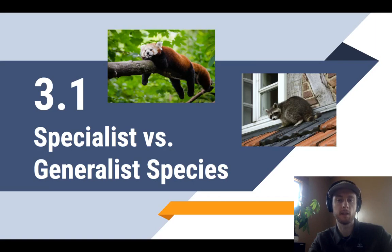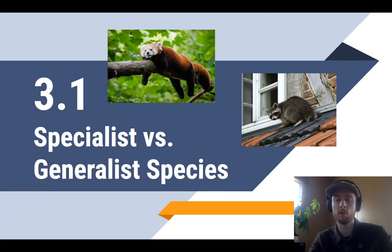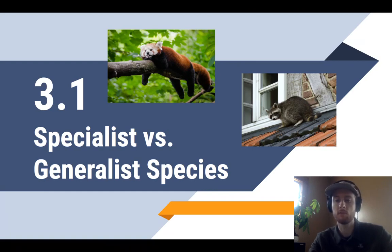Raccoons, on the other hand, have an extremely varied diet, so they're able to eat all sorts of foods. They can eat things like plants and mushrooms, they can eat the eggs of birds and reptiles, they can even eat small insects and amphibians. So they're far more adaptable or far more generalized, so we refer to them as a generalist species.